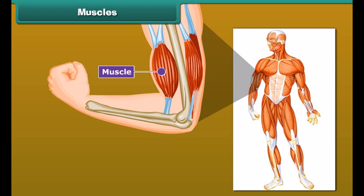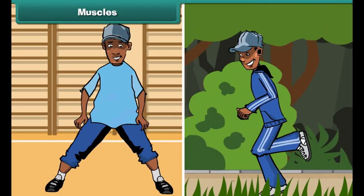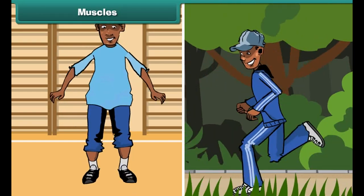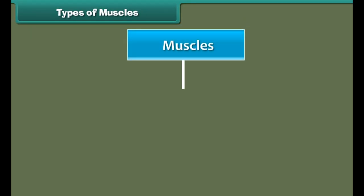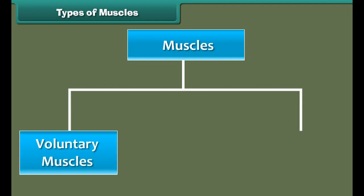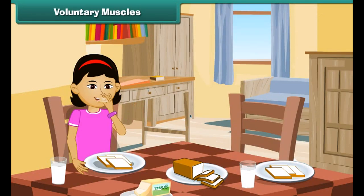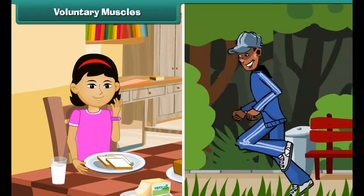Friends, make a tight fist and bend your arm at the elbow. Feel your upper arm — it feels harder. This is called the biceps. The biceps are muscles. There are about 600 muscles present in an adult human body. Muscles are made of fibers and are generally attached to the bones by means of tendons. Muscles along with bones help to give shape to the body and help the different parts of the body to make movements.